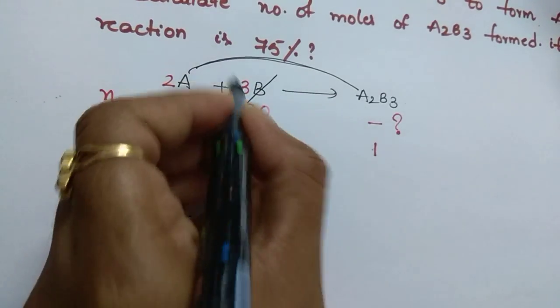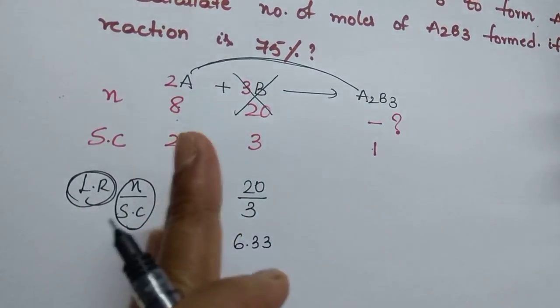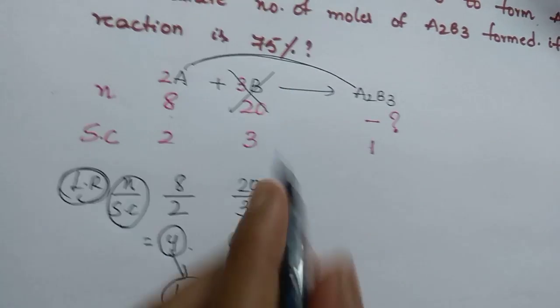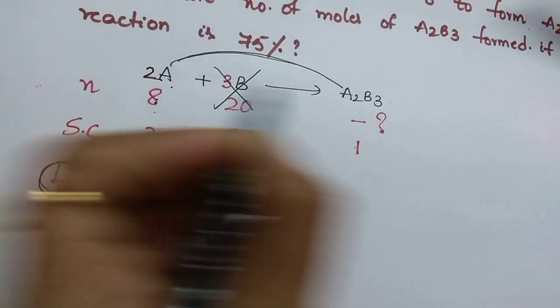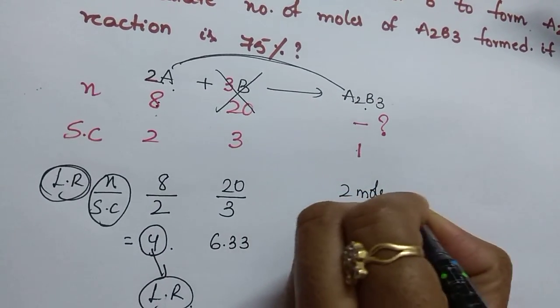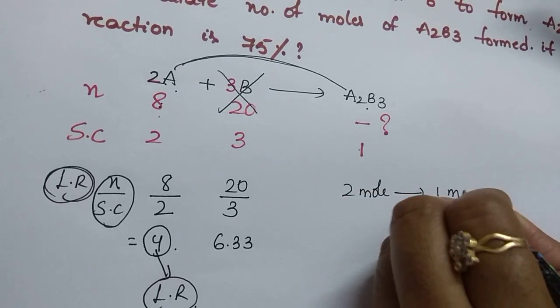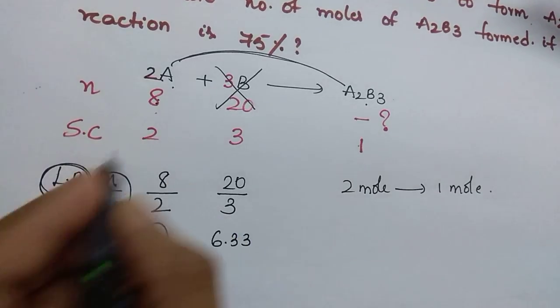We have to take the relation between only A and the product, not with B, because B is present in excess. From the balanced equation, 2 moles of A forms 1 mole of A2B3. Then how many moles does 8 moles of A form?